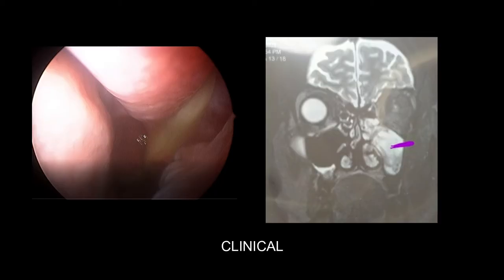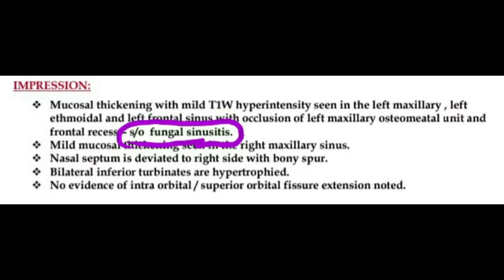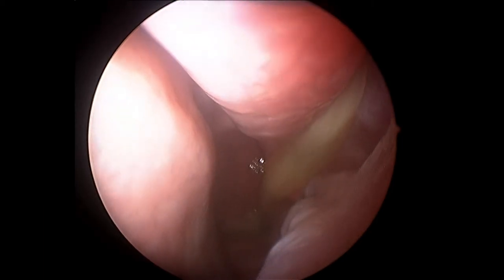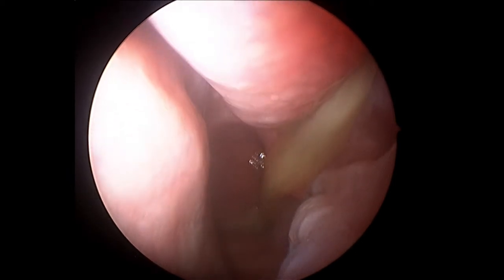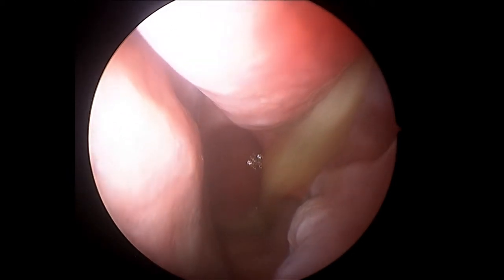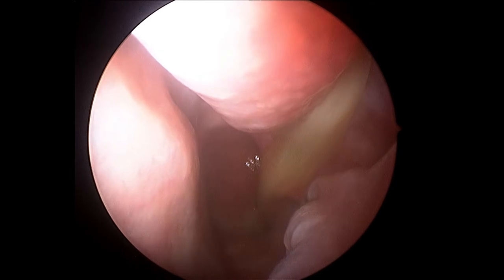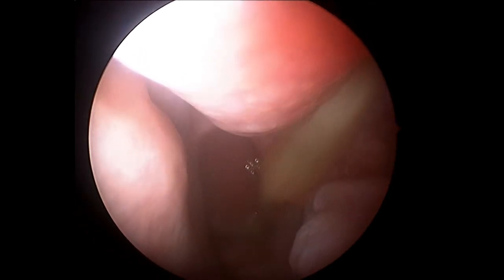He presented in our OPD with severe pain along his left side of the face. On clinical examination we did an endoscopy, which was perfectly normal except for some pustulent secretions along the posterior end of the nasal cavity from the middle meatus area. We did an MRI which showed some inflammatory tissue evidenced as fungal sinusitis, and we proceeded with functional endoscopic sinus surgery.